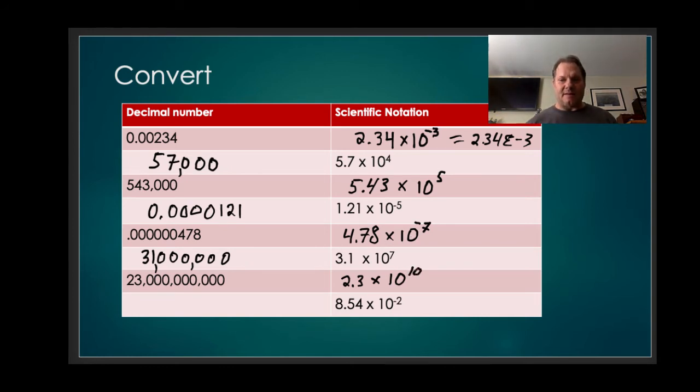Last one here. 8.54 times 10 to the negative 2. We're simply going to be moving the decimal to the left two times. So 0.0854 is the same as 8.54 times 10 to the negative second.